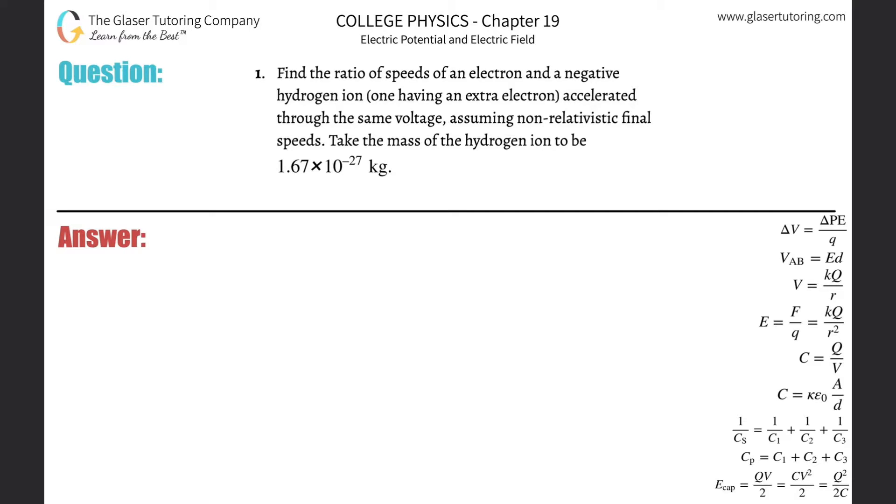I'm back. Did you miss me? Number one, find the ratio of the speeds of an electron and a negative hydrogen ion, having one extra electron that is accelerated through the same voltage, assuming non-relativistic final speeds. Take the mass of the hydrogen ion to be 1.67 times 10 to the minus 27, excuse me, kilograms.